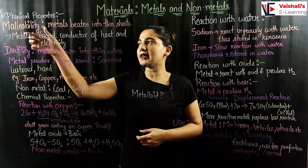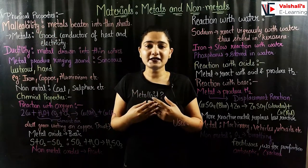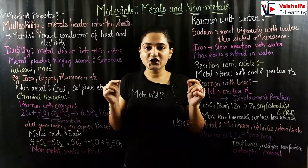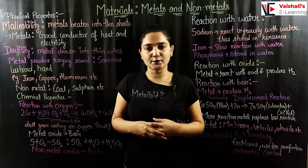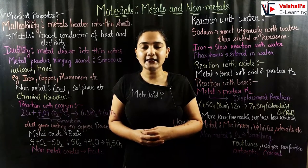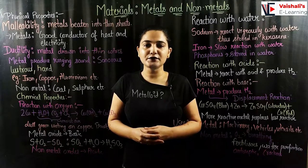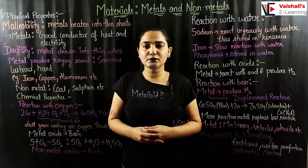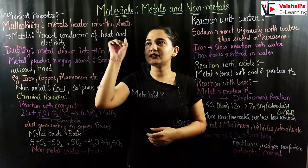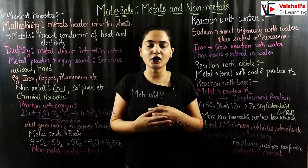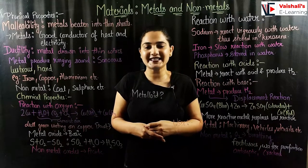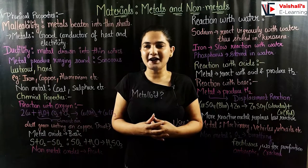The first physical property is malleability. You must have seen aluminium foils or silver sheets used for decorative purposes on sweets. This shows the property of a metal — it is able to be drawn into thin sheets. This is known as the malleability property. Metals can be beaten into thin sheets, whereas non-metals like coal, carbon, or sulfur cannot.